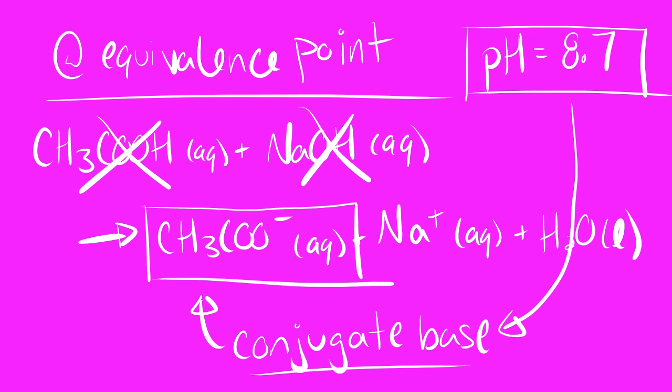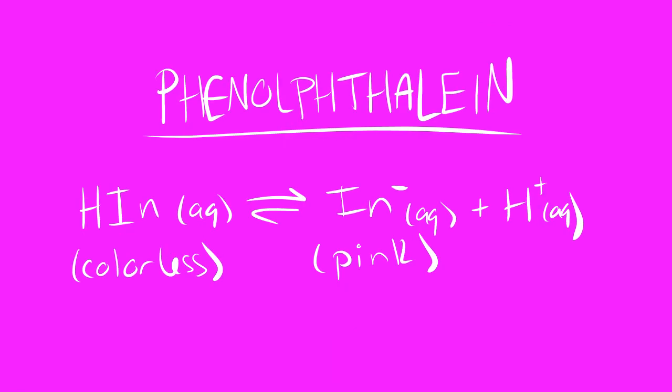Now this is going to be useful information for us because when we are working with a titration where one of the concentrations of our species is unknown, we have to have some way to mark when we are at the equivalence point. What we are going to do to accomplish this as a visual aid for when we are at the equivalence point of this reaction is we are going to be adding an indicator known as phenolphthalein to the solution.